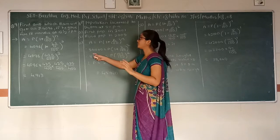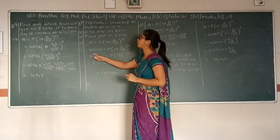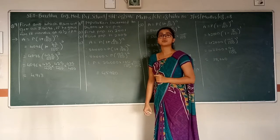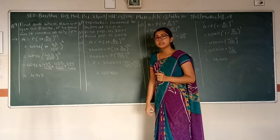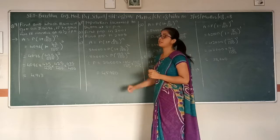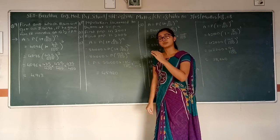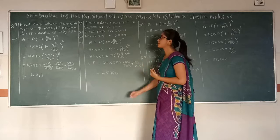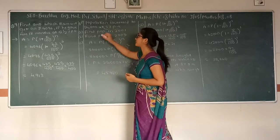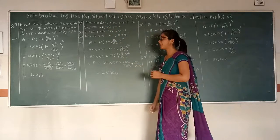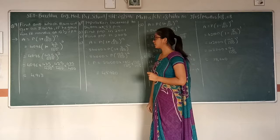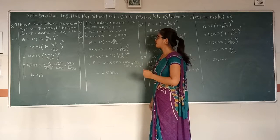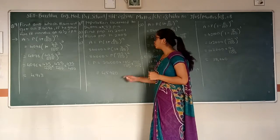Now the population given in the question is of the year 2003, and we have the population of 2001. Since the population is increasing at 5% per annum, 54,000 is equal to P into bracket 1 plus 5 upon 100 raise to 2.